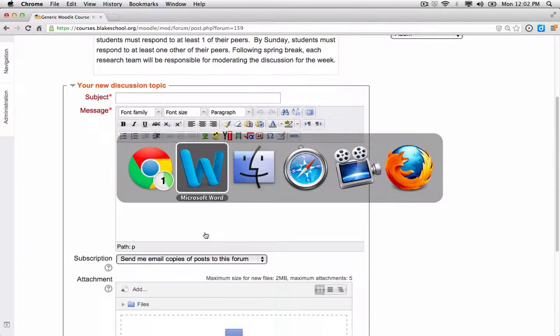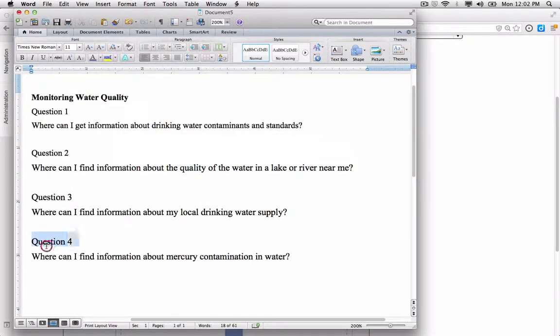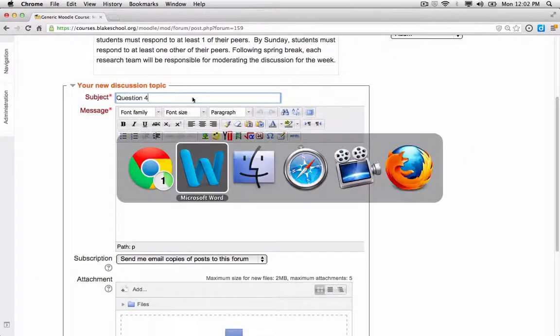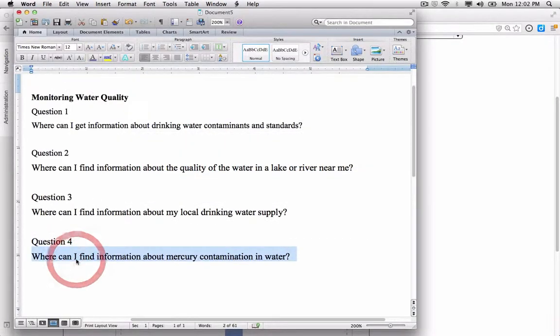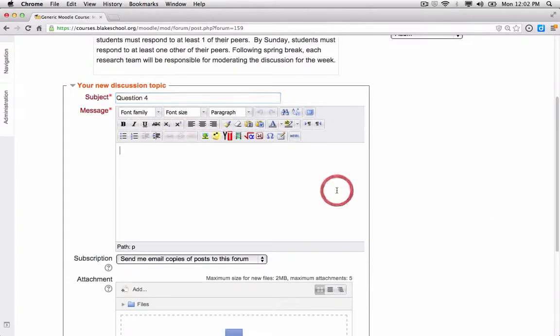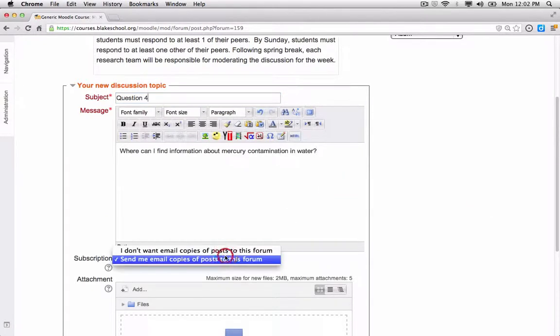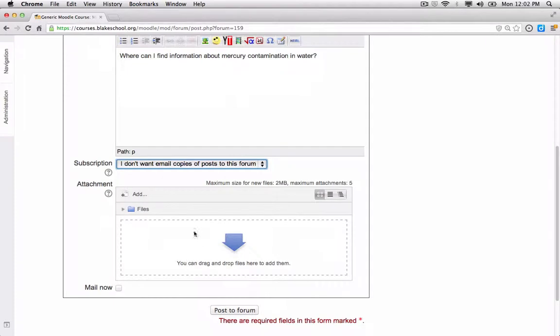So I'm just going to go ahead and go back into Microsoft Word where I have my fourth question. And I'm copying and pasting by using command C. And I'm choosing not to receive email copies of this forum. Now if I had some attachments, I could go ahead and drag and drop them here as well. So I'm going to go ahead and post to the forum.